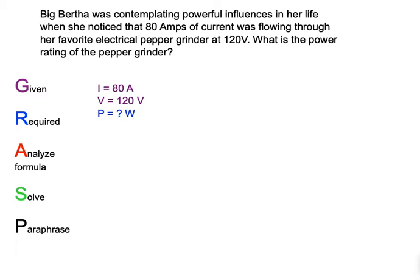What we need to do is organize the question in such a way that we can clearly see the end from the beginning, and so that we can see a pathway, a way of thinking. That's why I always encourage the GRASP method. So, G, first write down what is given, and I've done that in purple. In the question, it says 80 amps and 120 volts. That's the information that we have.